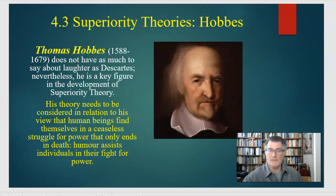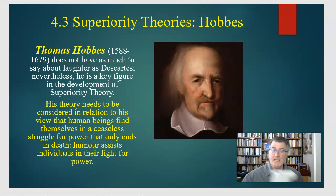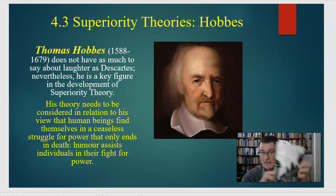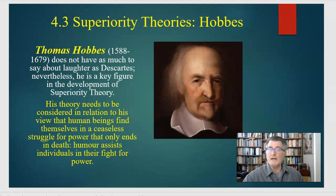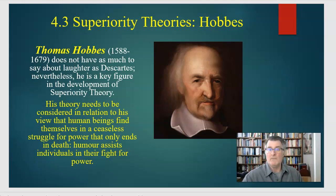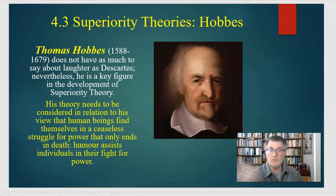His theory needs to be considered in relation to the view that human beings find themselves in a struggle for power that ends only in death. In his book Leviathan, he talks about social contract theory as a solution to living in a state of nature — basically everyone out for themselves, no sense of law, no decorum, no morality, a war of all against all. That ceaseless struggle for power is Hobbes' view of people. He was very pessimistic about human nature because he saw that people were capable of killing one another — he survived the English civil war, where a country splits in half and they fight each other.